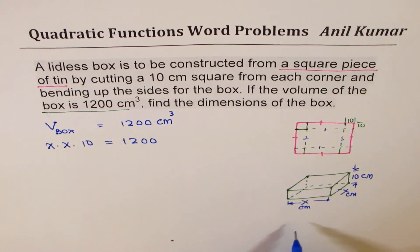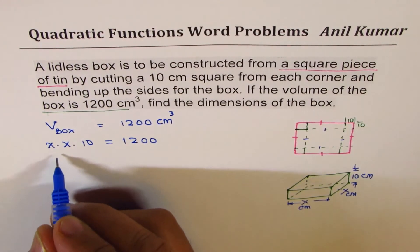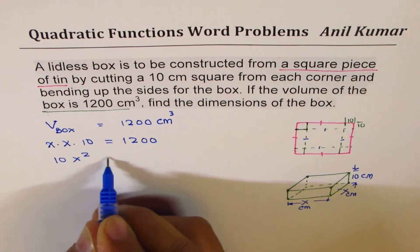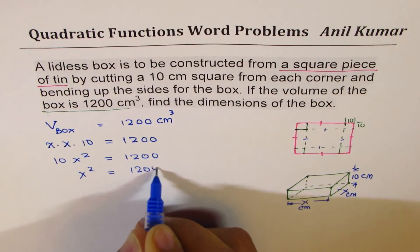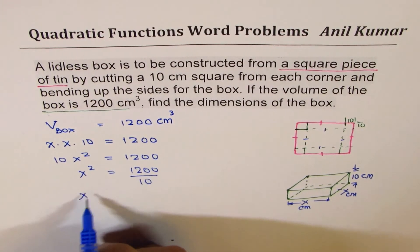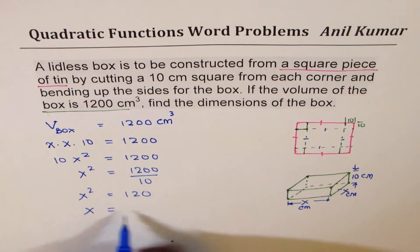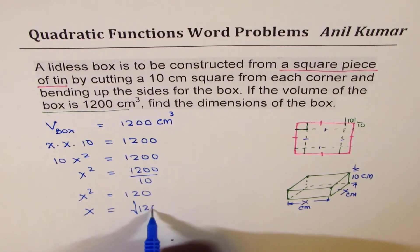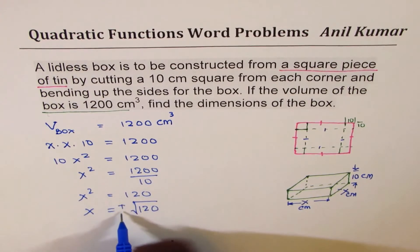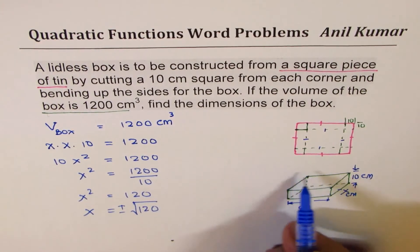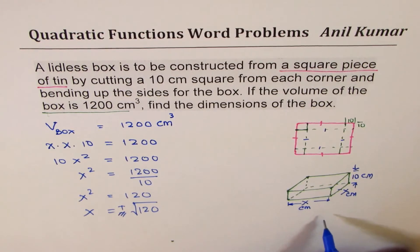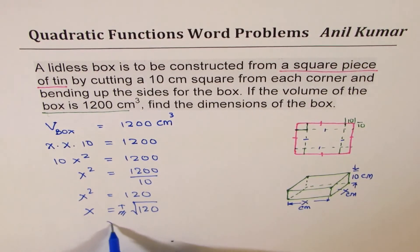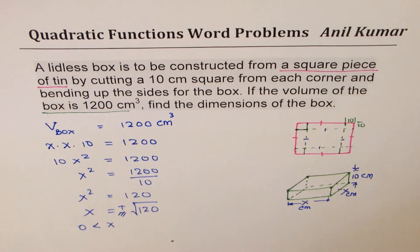So this could be written as 10x² = 1200, x² = 1200 divided by 10, x² = 120, x equals square root of 120. So normally you do plus and minus, however in these dimensions all are positive, so this should not be negative, it doesn't make sense. So we know that x has to be greater than zero.